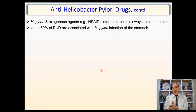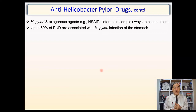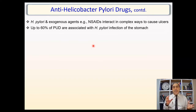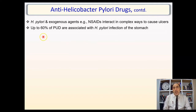NSAIDs inhibit the production of prostaglandins, which normally inhibit HCl secretion, enhance production of mucus and bicarbonate, and enhance mucosal blood flow. So the combination of NSAIDs in an H. pylori-positive patient results in severe ulcer and enhanced recurrence rates. Up to 60% of peptic ulcer patients are associated with H. pylori infection in the stomach — a huge percentage — and whenever it's present, the condition is very bad.